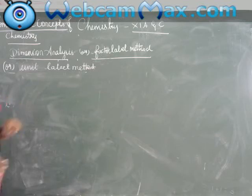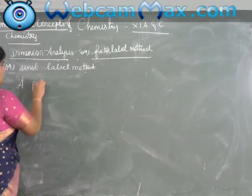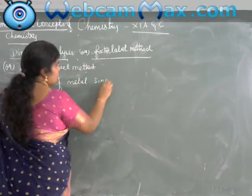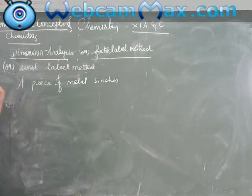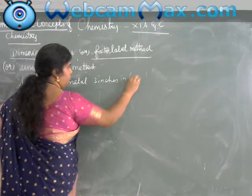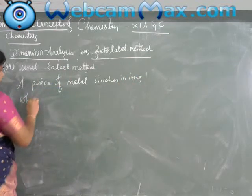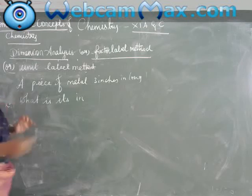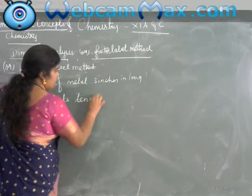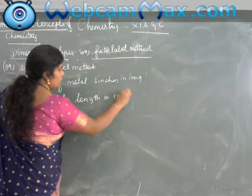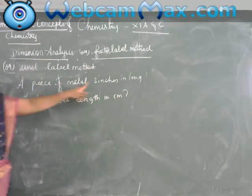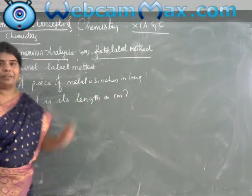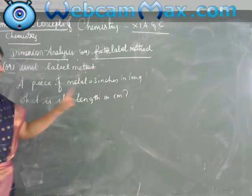Take down the first example. A piece of metal is 3 inches long. What is its length in centimeters? This is the first question. To solve this, you should first know the relation between centimeters and inches.